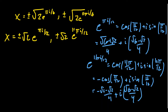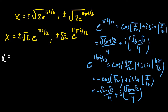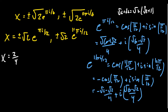Now let's consider the four solutions, now that we've handled these exponential expressions using Euler's identity. We get x equals root 2 times e to the pi i over 12. Multiplying by root 2 gives a factor of 2, because root 6 plus root 2 is root 2 times root 3 plus 1. So we get 2 over 4 times root 3 plus 1, plus 2i over 4 times root 3 minus 1.